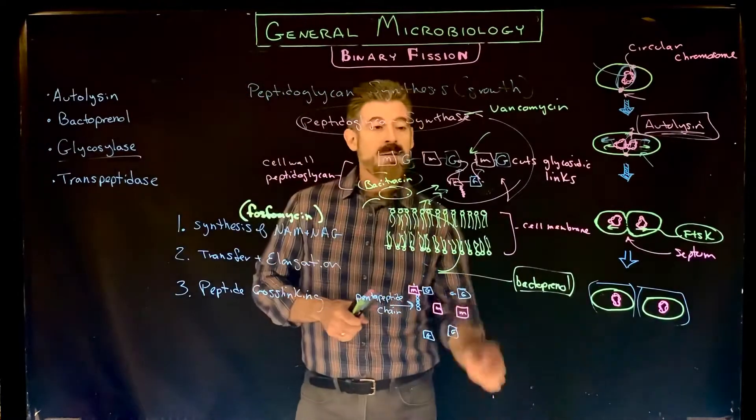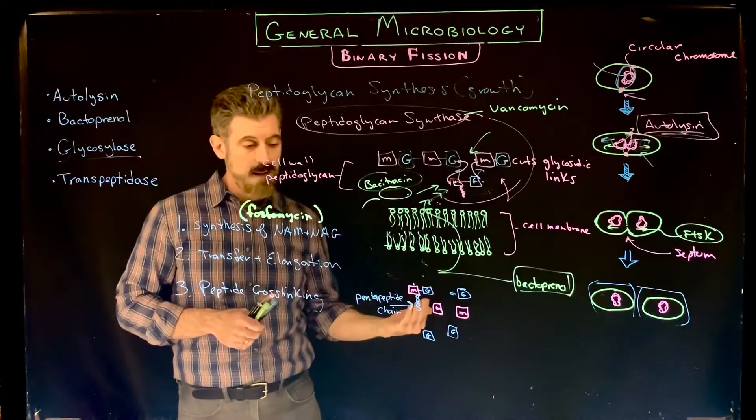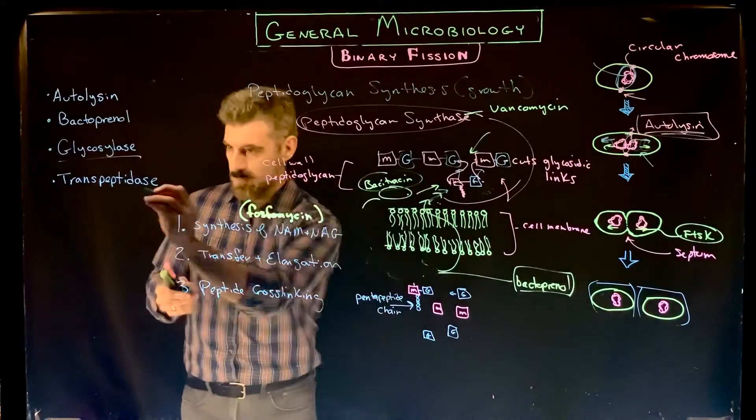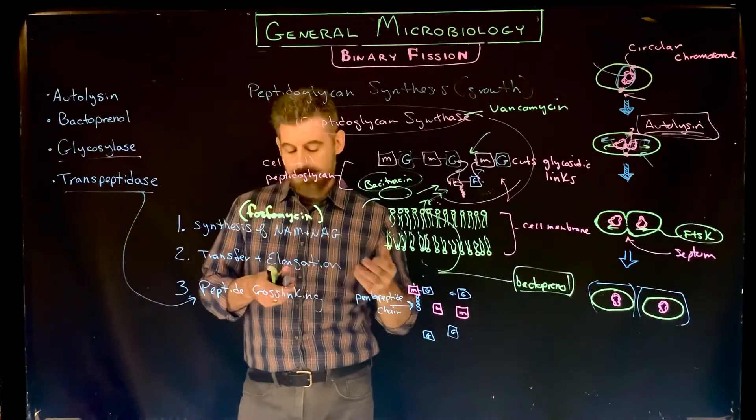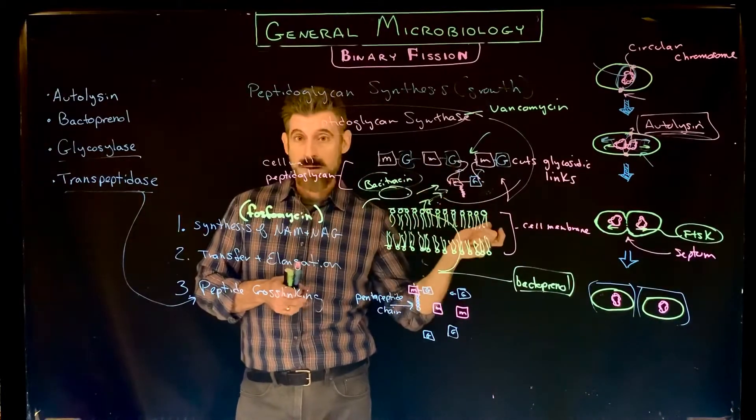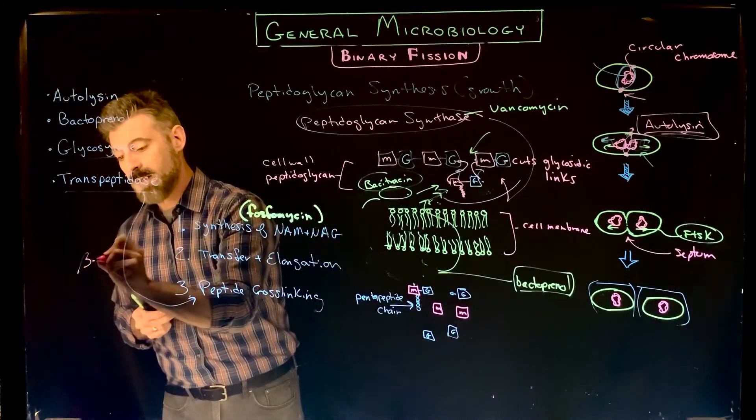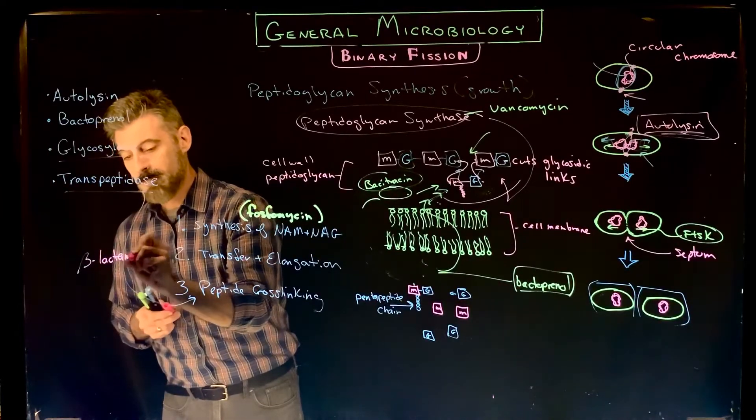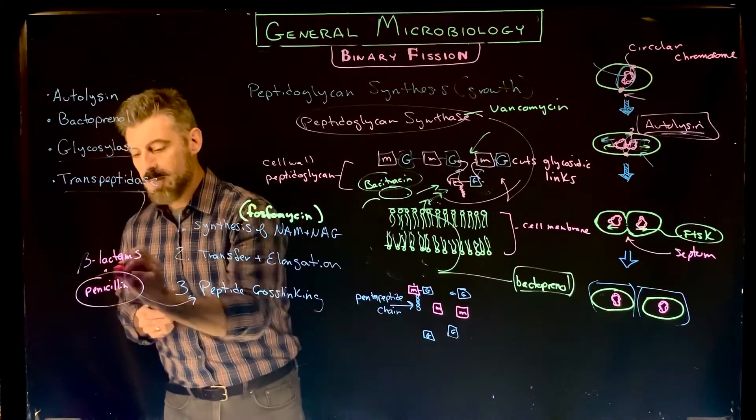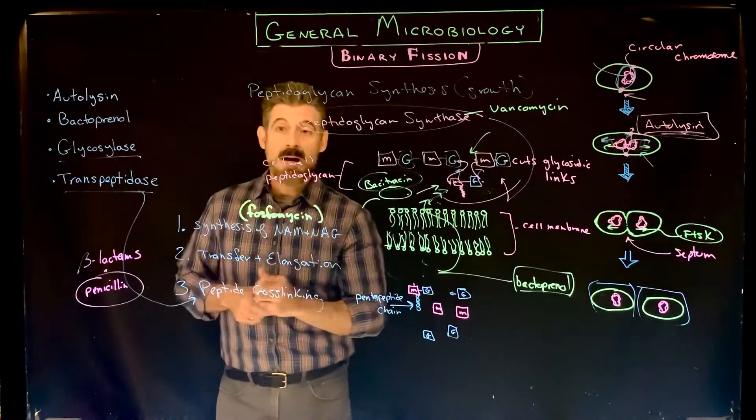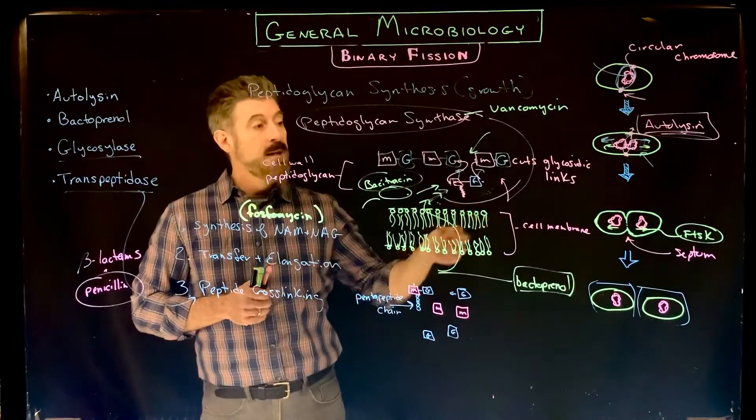Once you start to make these layers, this little peptide here needs to bind with the peptide of another NAM. We have an enzyme called transpeptidase, and the transpeptidase is the one that will make the new peptide crosslinks. It simply makes the bond between the peptides. The beta-lactams, which are a class of antibiotics, a well-known one is penicillin, interfere with transpeptidase. So penicillin interferes with the enzyme that allows the peptide crossbridges to form.